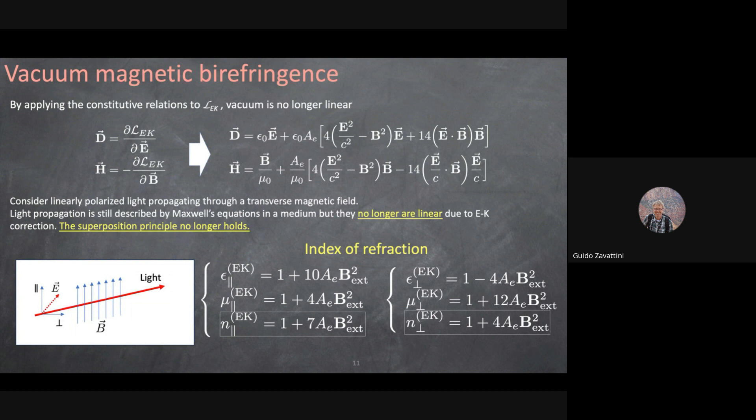The index of refraction is no longer equal to one — it depends on the external magnetic field and on whether the polarization is parallel or perpendicular to the field, with coefficients of 7 and 4 respectively, so there is a difference. Vacuum becomes like a crystal: it is birefringent.